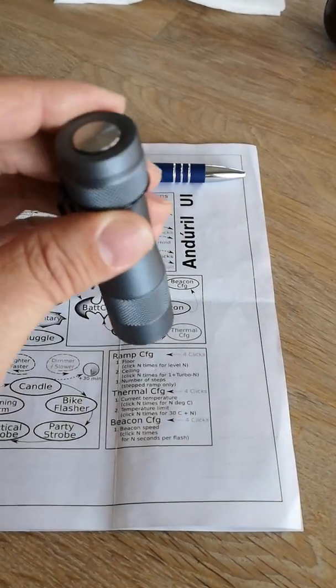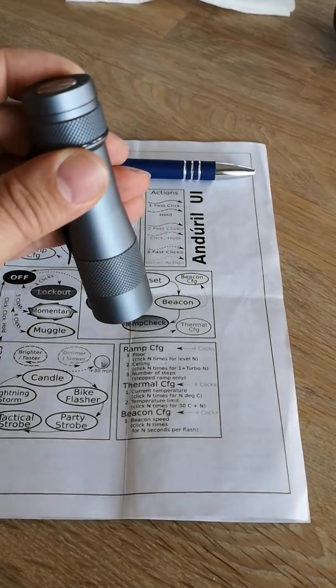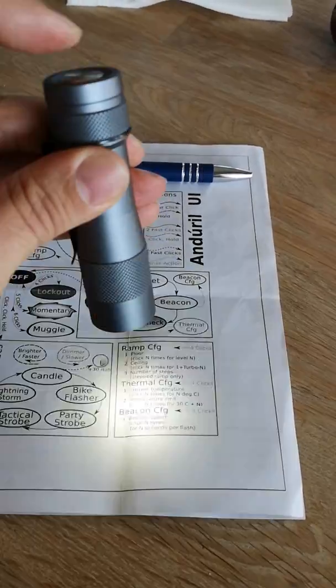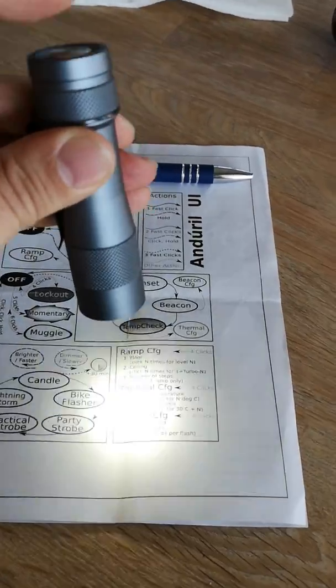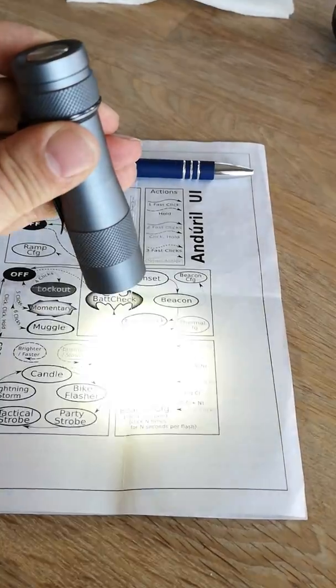So we want to enter now the actual temperature. 1, 2, 3, 4. Blink. Waiting. 1, 2, 3, 4, 5, 6, 7, 8, 9, 10, 11, 12, 13, 14, 15, 20, 21. And now I see no more clicks.